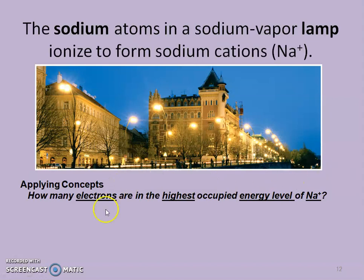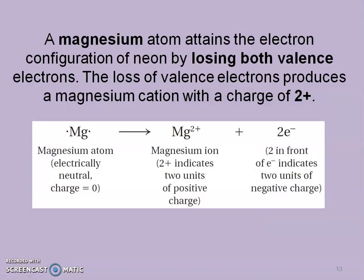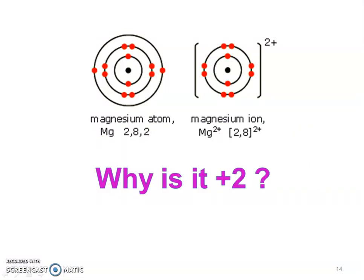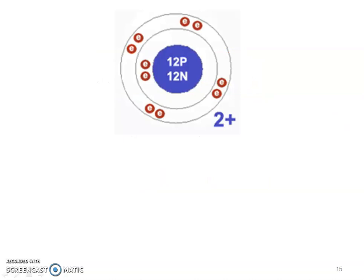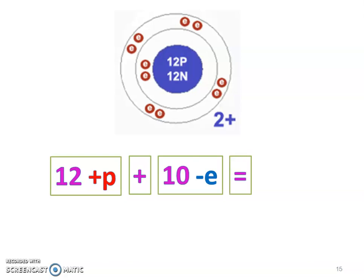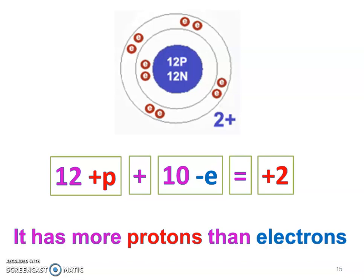Pause, read, and answer the question — hopefully you came up with eight, because now that it's an ion it has eight valence electrons. Here's another example: magnesium, now losing two electrons. The reaction looks very similar but now it has a plus two charge. Let's look at why — we go from the magnesium atom to the magnesium ion. It has 12 positive protons, it lost two electrons so it now has 10 negative electrons.